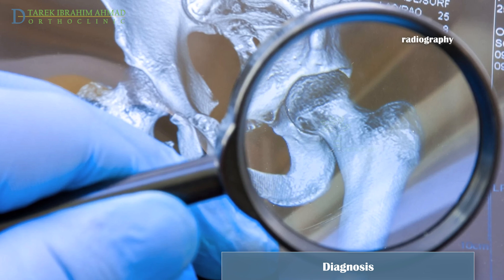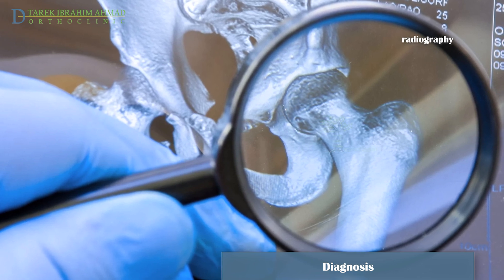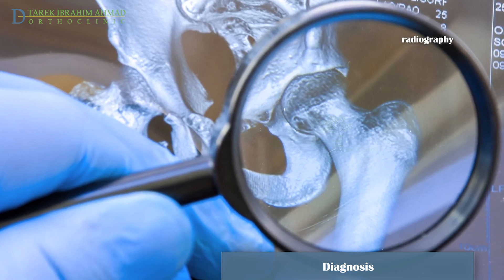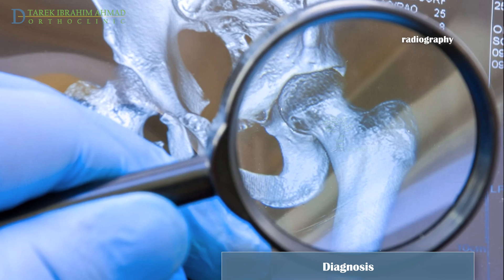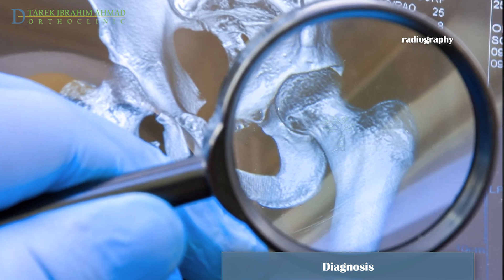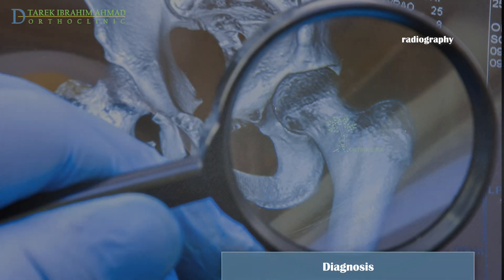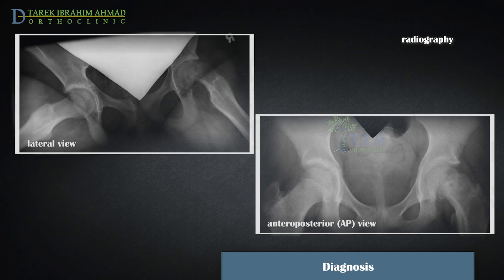The diagnosis of SCFE usually is made based upon plain radiographs, which reveal an apparent posterior displacement of the femoral epiphysis. The minimum radiographic examination consists of an anteroposterior view and lateral projections of both hips to permit comparison, which may facilitate identification of subtle findings and account for the high incidence of bilateral disease.